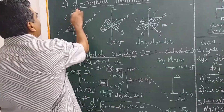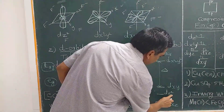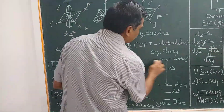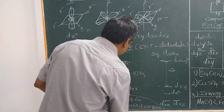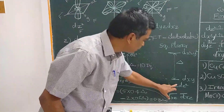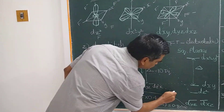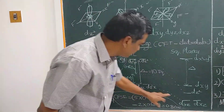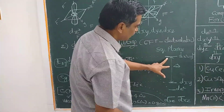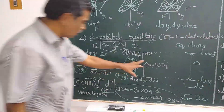For a square planar complex, there are no ligands in the z-direction. Therefore, the dz² orbital is very much lower in energy because there is no encounter along the z-axis. The dx²−y² remains highest, followed by dxy, then dz², and finally dyz and dxz at the lowest levels. The energy gap within the crystal field splitting diagram gives the crystal field stabilization energy Δ₀ for this complex.